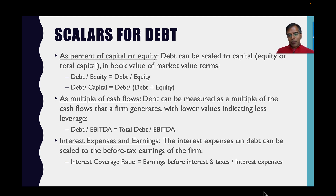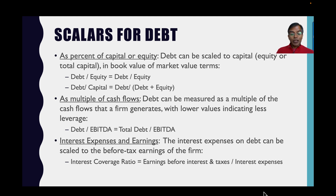Debt can also be scaled to cash flows. The simplest and most accessible cash flow for a firm is earnings before interest, taxes, depreciation, and amortization (EBITDA). So I look at total debt as a percentage of EBITDA. The lower this number, the less debt a company carries. For example, a company with $500 million in debt and $100 million EBITDA has a total debt-to-EBITDA of five, meaning it owes five times more dollars than it generates each year in cash flows.